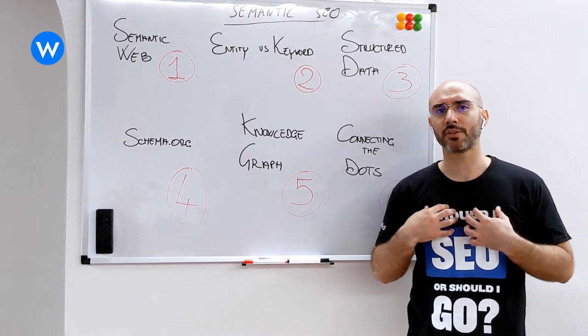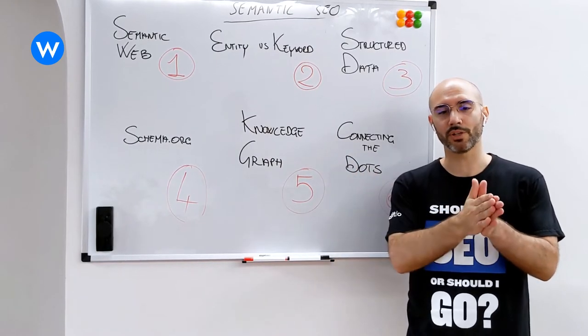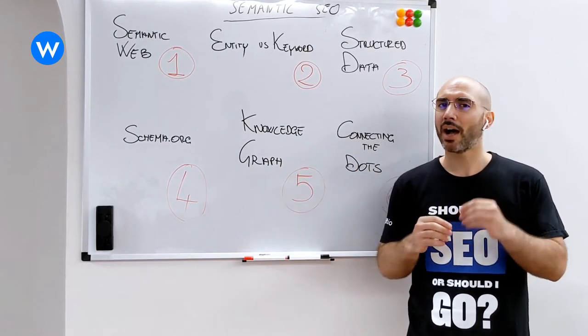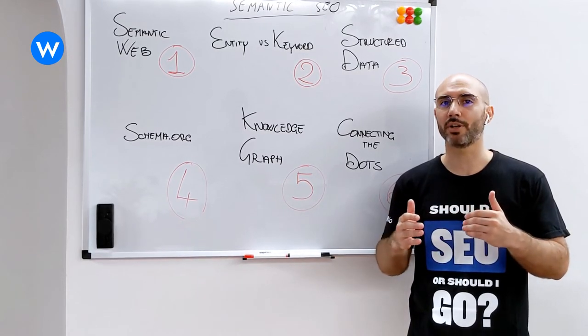If I say I am Gennaro, Gennaro works at WordLift, you understand that there is a relationship between Gennaro and WordLift. But how does a machine know that we are creating a relationship here?